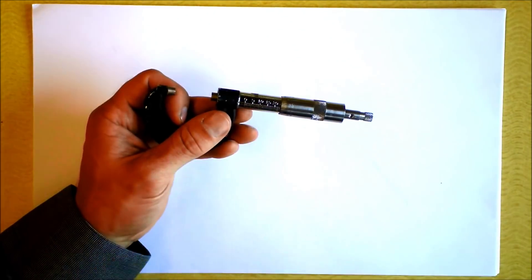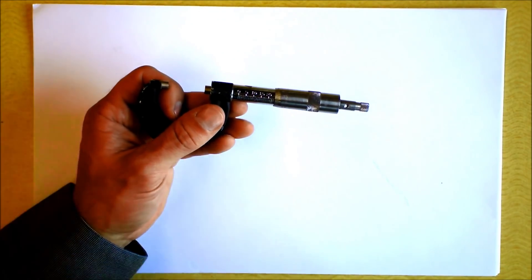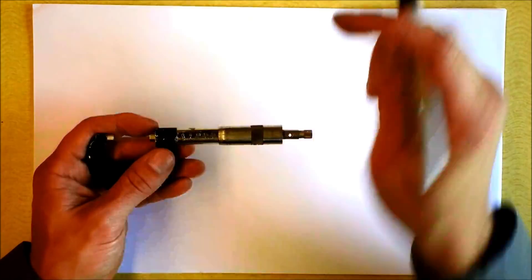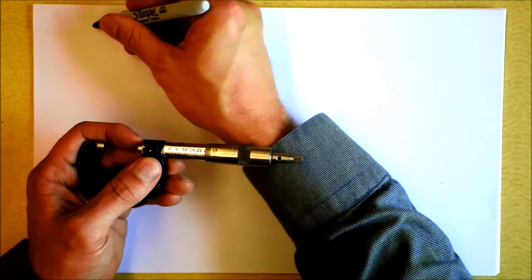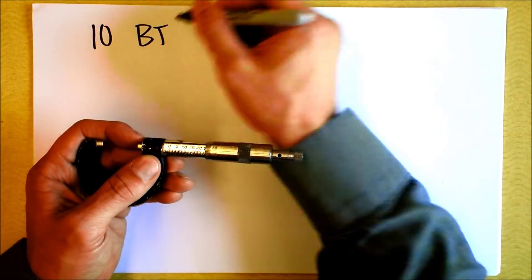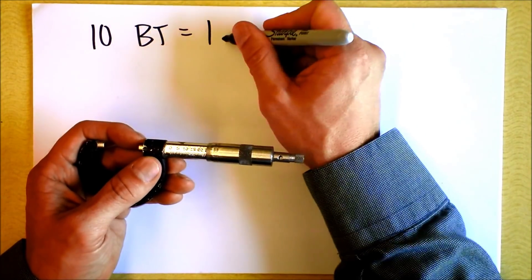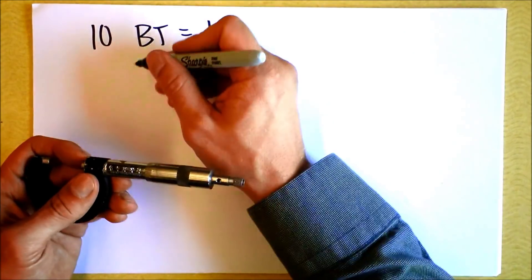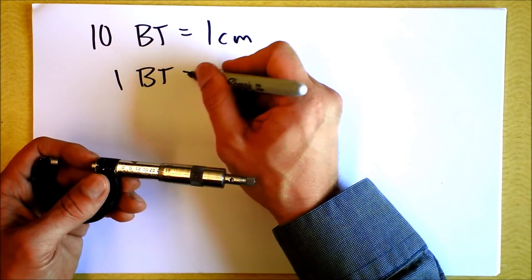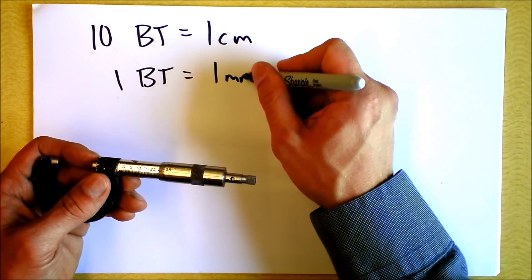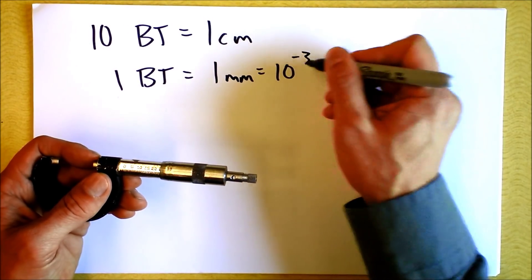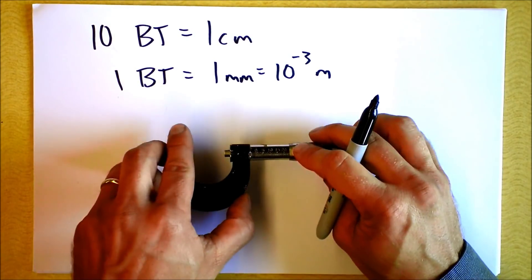So it says that 10, whatever 10 is, I'll call these big tick marks here. It's got 10 big tick marks. And I know that's equal to one centimeter. So that means one big tick mark equals one millimeter, 10 to the negative third meters. We're just trying to get organized here.